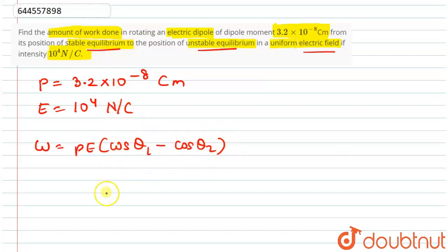We started from stable equilibrium, which means θ₁ = 0°. And θ₂ = 180°, which is unstable equilibrium. We have all the values, now we put them in.